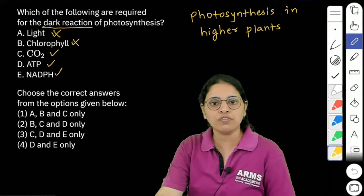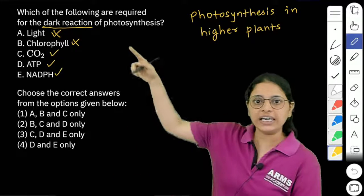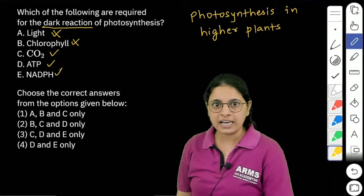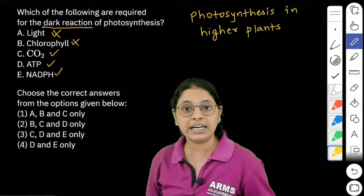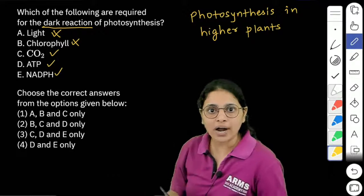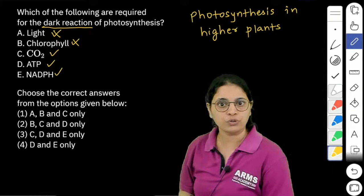So out of these five things, we can see that C, D and E, that is CO2, ATP and NADPH, are required during dark reactions of photosynthesis.